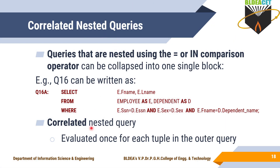Before going to correlated nested queries, let me revisit one example from nested queries: retrieve the name of employees whose first name is the same as their dependent name and have the same sex. For that you already written the solution using a nested query. Where you used equal or IN comparison operators, you can collapse that into a single block instead of a nested query.